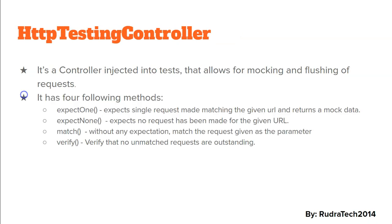The HttpTestingController is injected into the test and allows for mocking and flushing of requests. That means it helps us to mock whatever data is sent and responded back, along with mocking the HTTP request itself. You don't have to actually write or call the backend using the HttpClientModule. This HttpTestingController helps us to mock the request and the response, making it easy to test our HTTP requests. It has four methods.